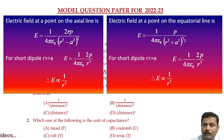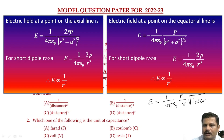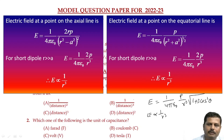On the equatorial line we get E equals minus 1 over 4π times p divided by (r² plus l²)^(3/2). For a short dipole this gives E equals 1 over 4π times p divided by r³. Here also E is inversely proportional to r³. When we consider any general point, E equals 1 over 4π times p divided by r³ times the square root of (1 plus 3cos²θ). Here also E is inversely proportional to r³. So option B is the right answer.